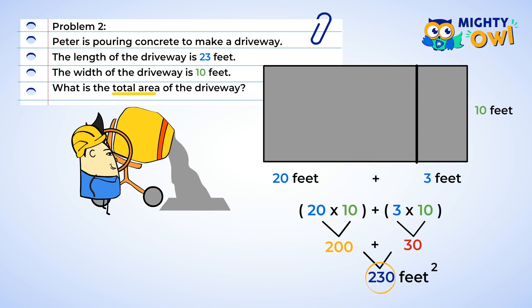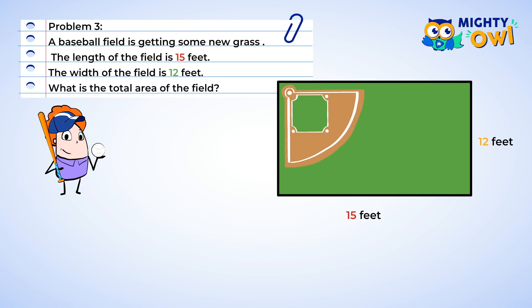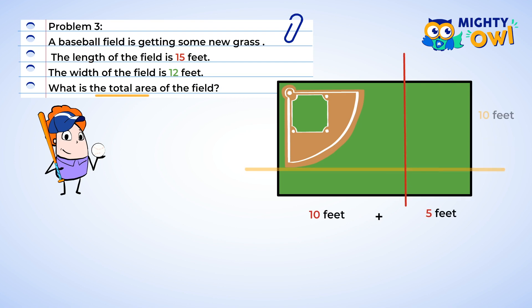We're getting pretty good — I think we're ready for a challenge. A baseball field is getting some new grass. The length of the field is 15 feet and the width is 12 feet. What is the total area of the field? We have two big numbers. Don't you think we can just try breaking them both up? Let's break 15 up into 10 plus 5, and let's break 12 up into 10 plus 2.